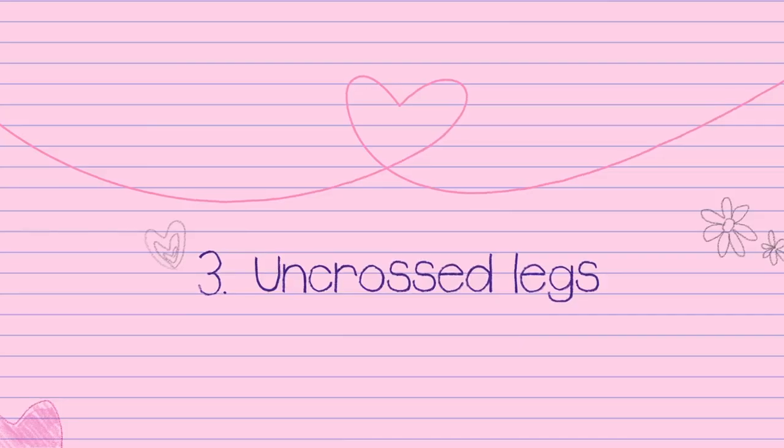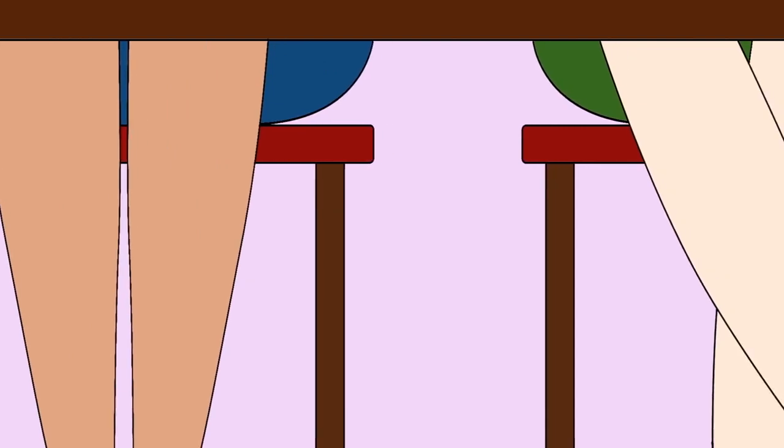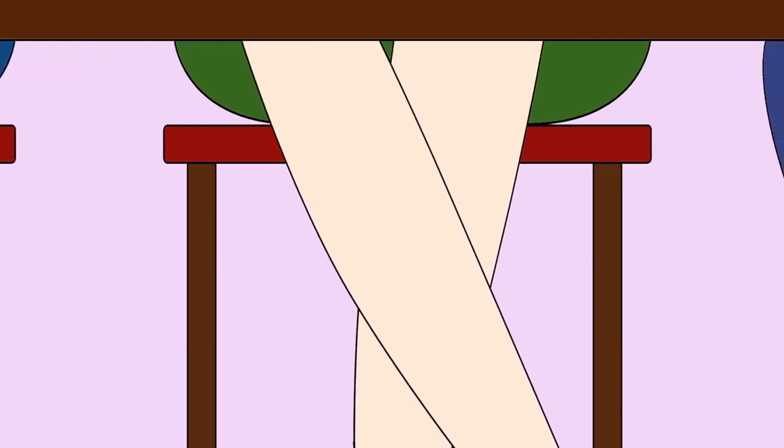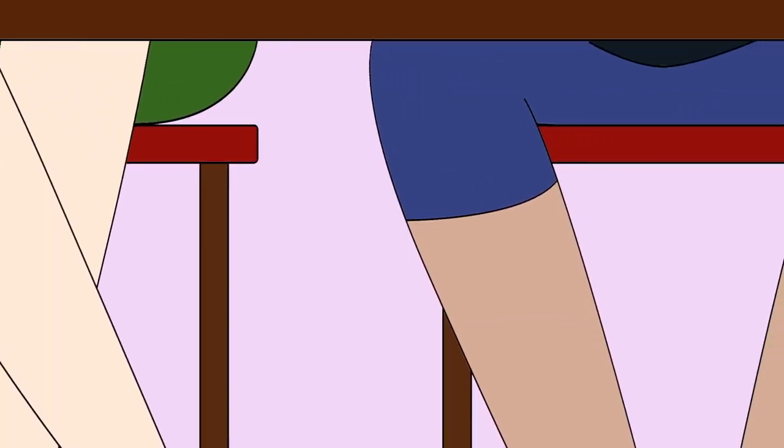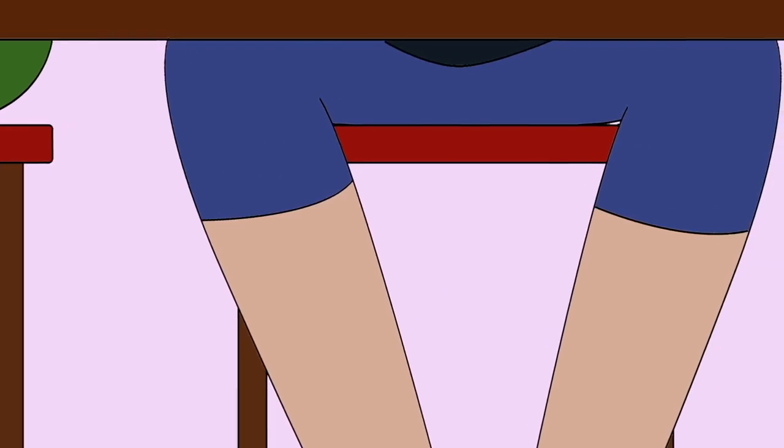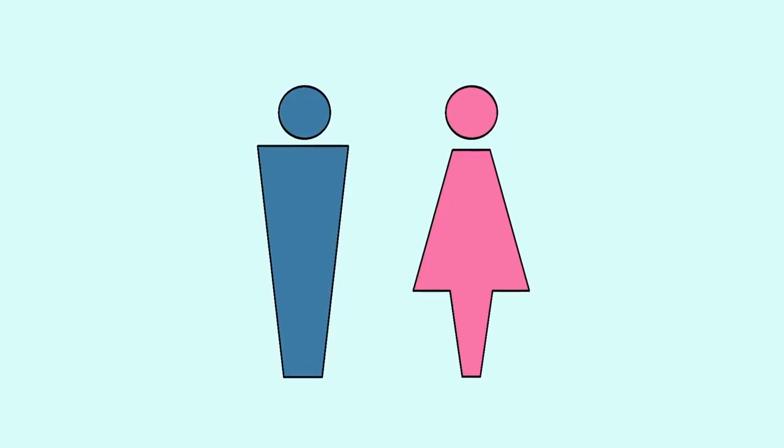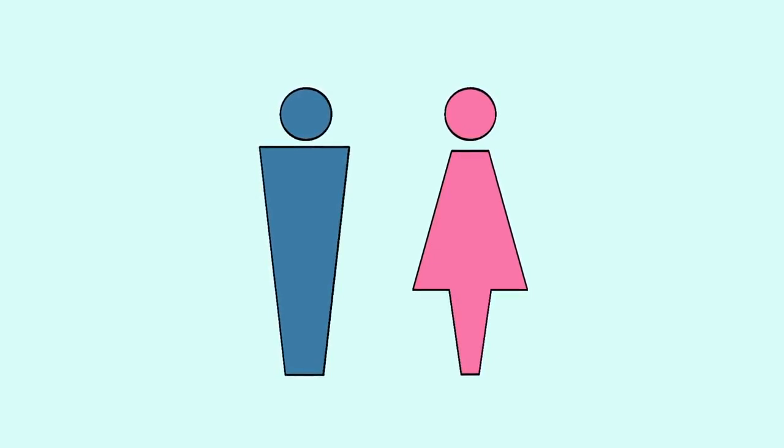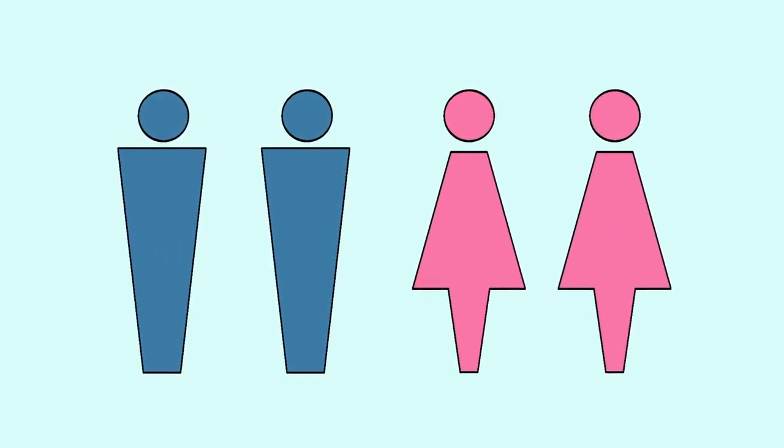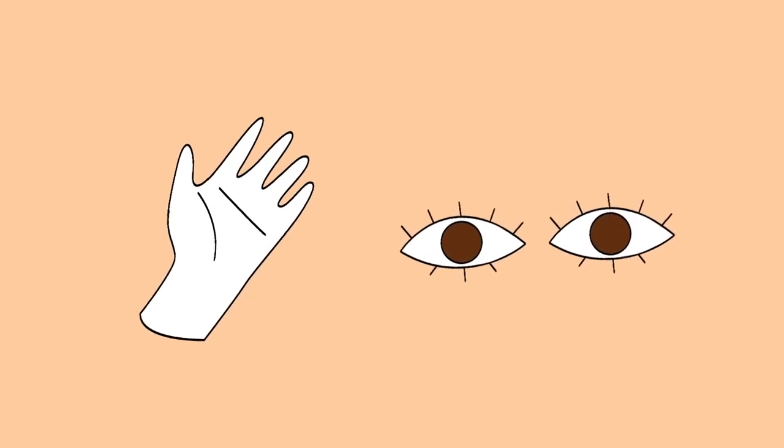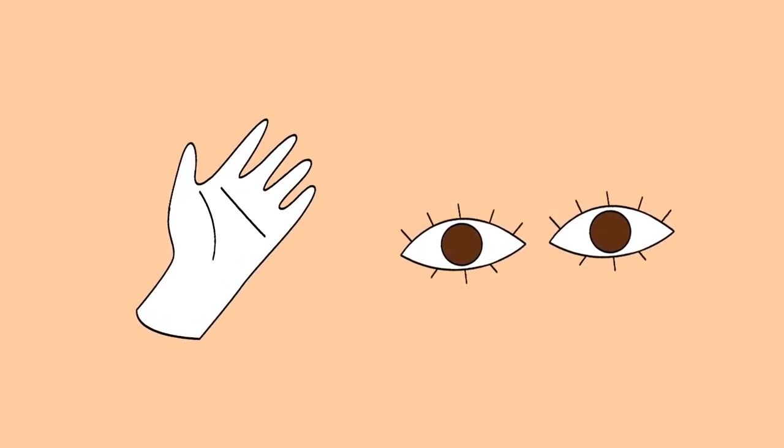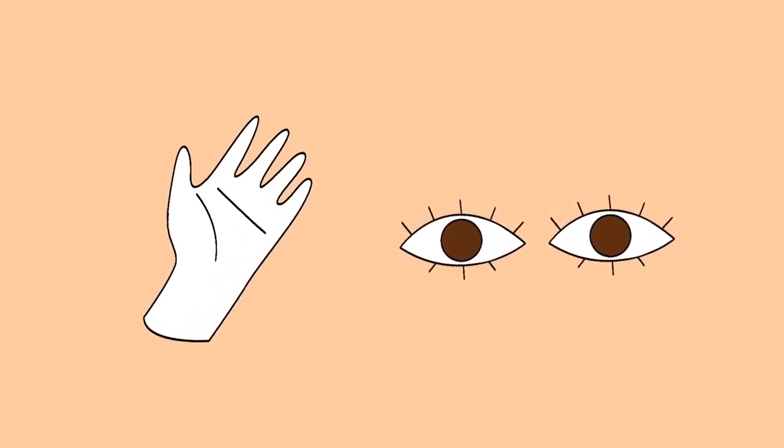3. Uncrossed legs. Body language also reveals a lot about availability. For example, when someone uncrosses their legs and arms, they're basically saying, I'm available. This is basic body language in both men and women, so this rule also applies with same-sex couples. There are plenty of other signs of open body language, such as upturned palms, maintaining eye contact, and many more.